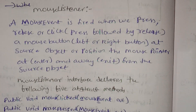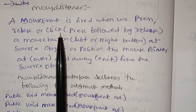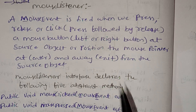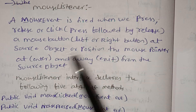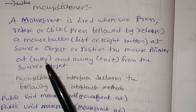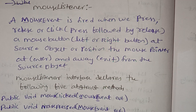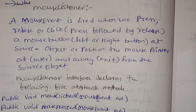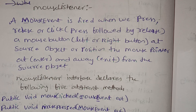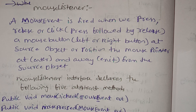Mouse listener interface handles mouse events. MouseListener has 5 methods: when we press, release, click — press followed by release — and mouse button left click, right click. Also handles the mouse pointer entering or exiting the source object: mouse enter and mouse exit. MouseAdapter is also available.